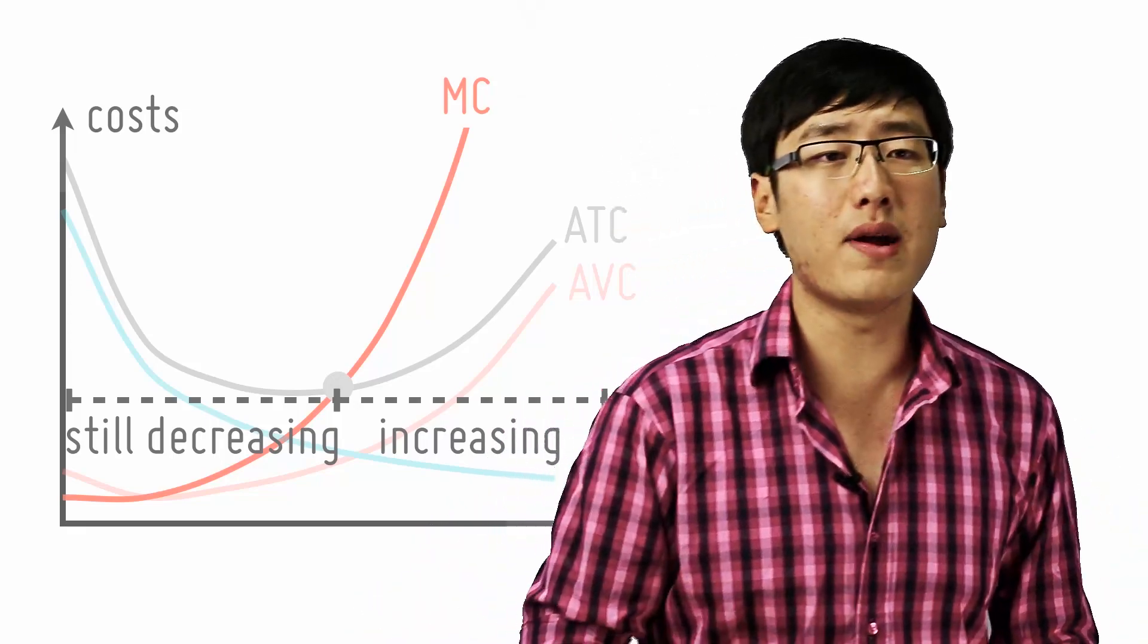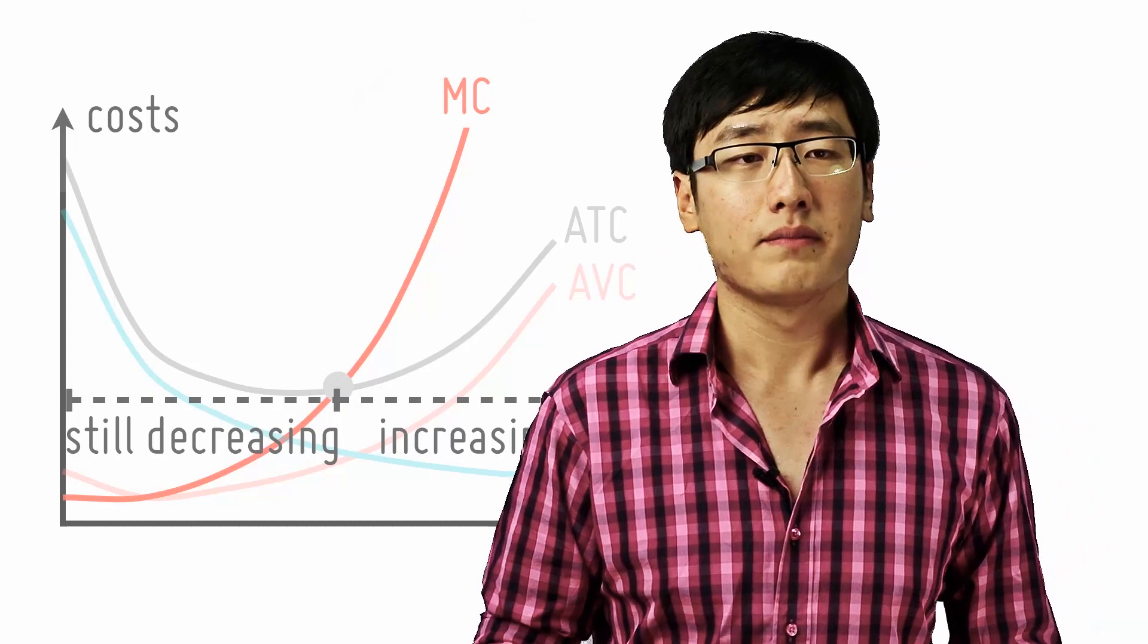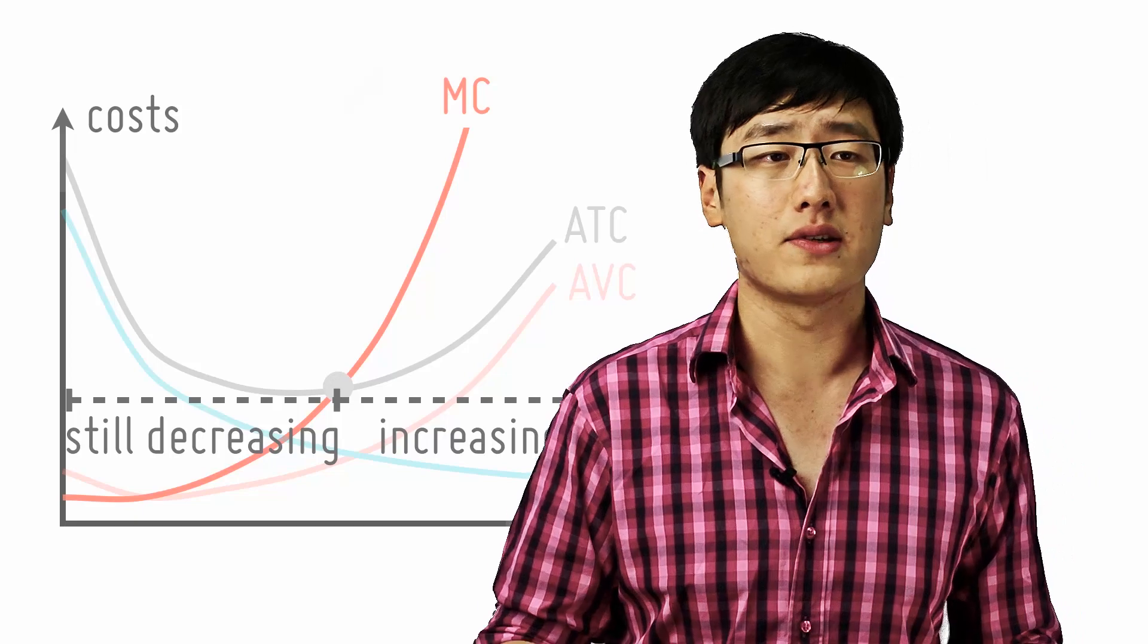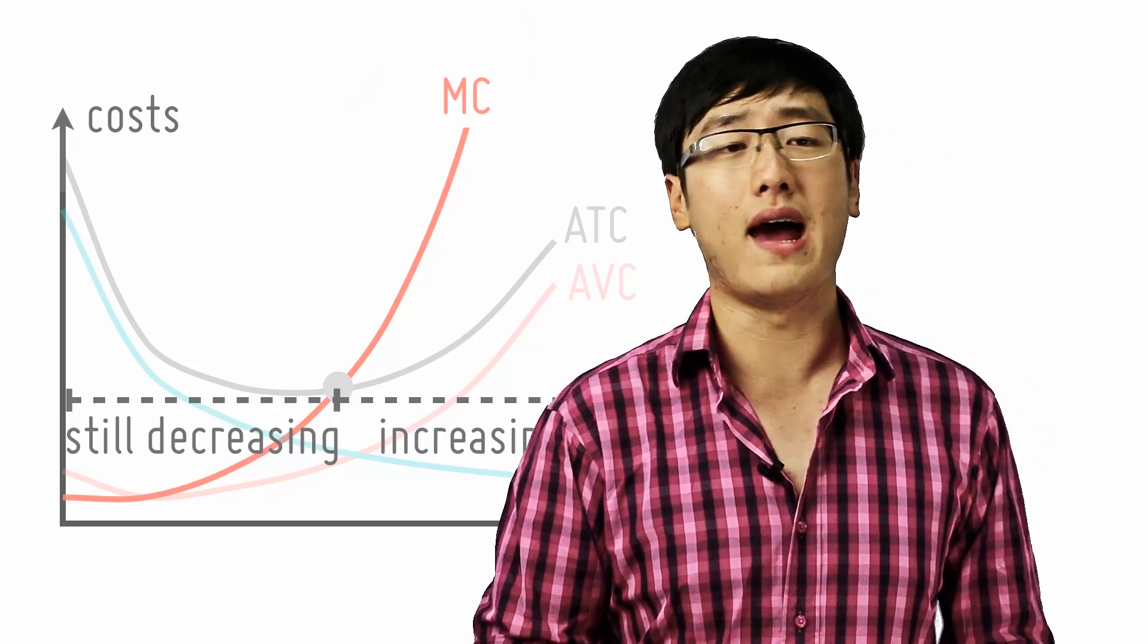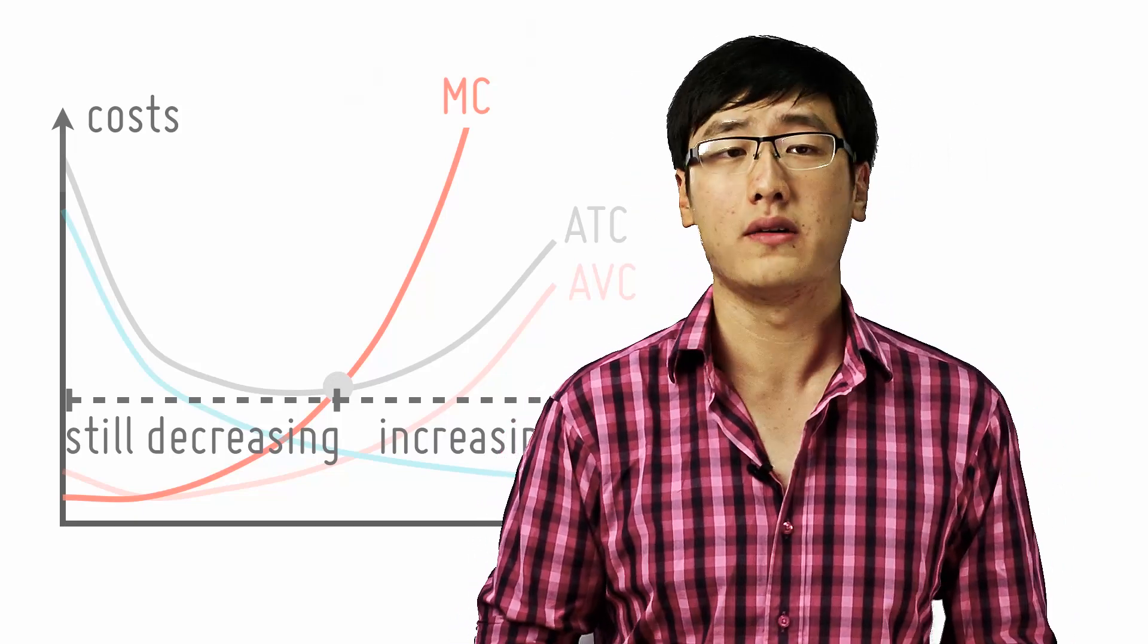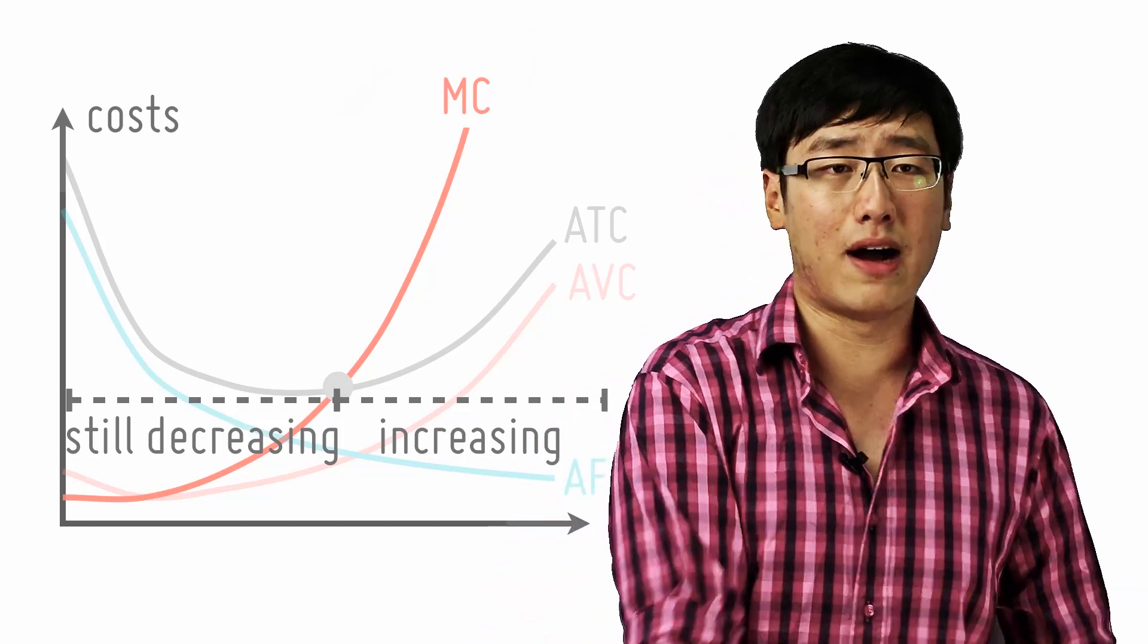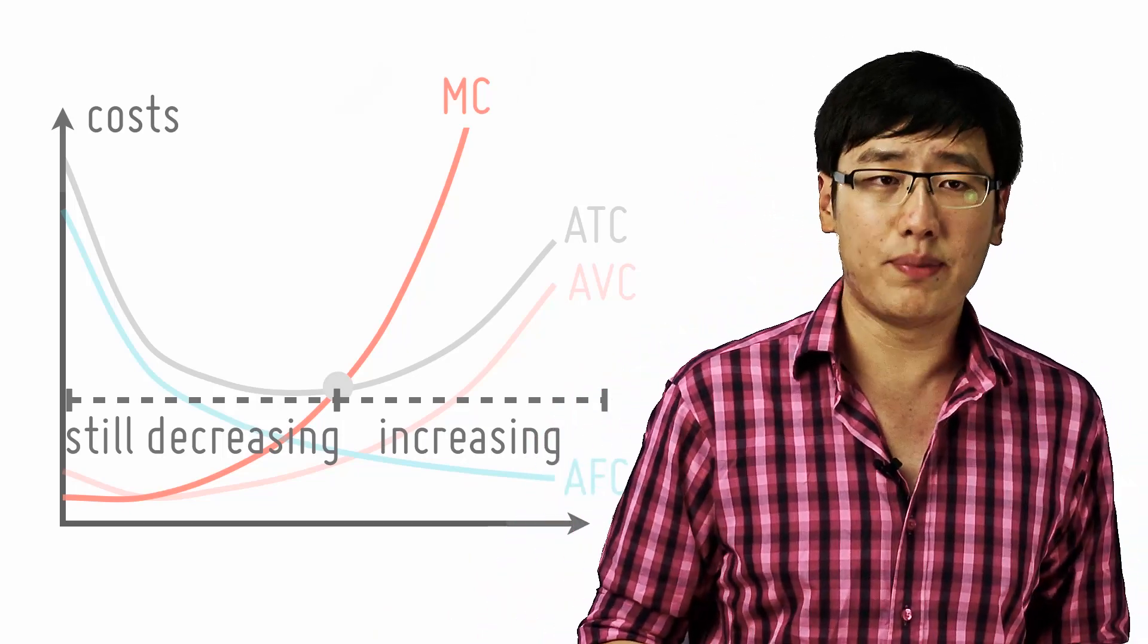Same here. So even when the marginal cost increases, at this portion, the average cost can still decrease. Only when the marginal cost is higher than the average cost does the average cost increase as well. So this is another example of the relationship between all averages and marginals. Think about each example and you will get it.